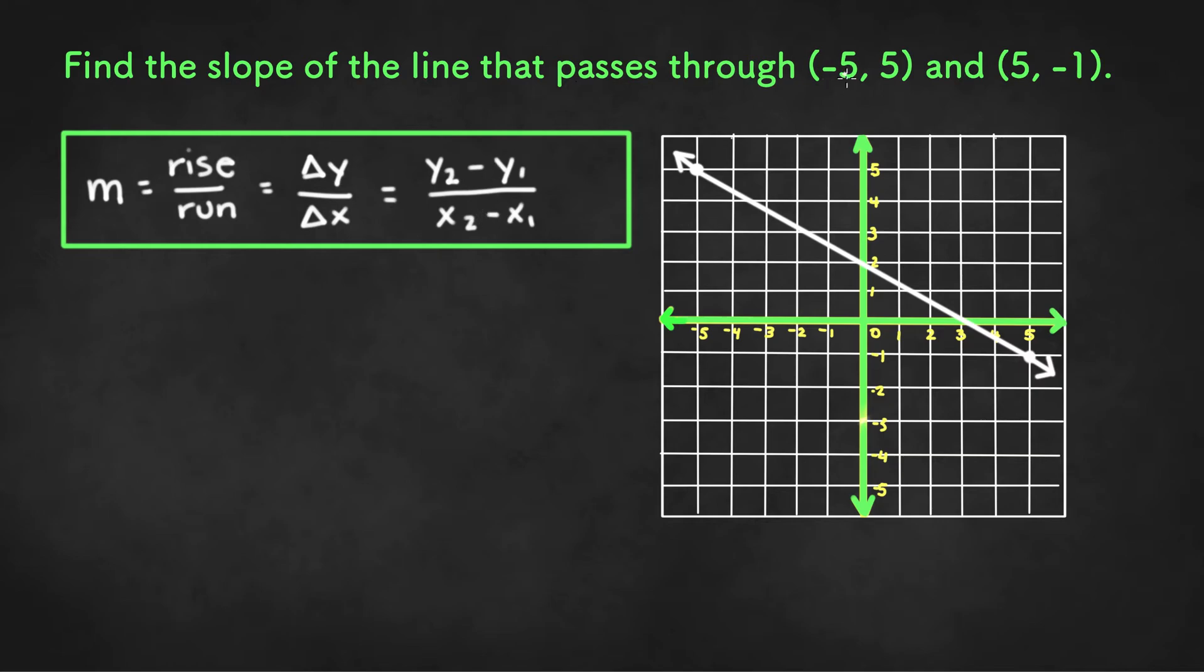So we can choose one of these points to be x1, y1 and one of the points to be x2, y2. So this one can be x1, y1 and that leaves this one to be x2, y2.